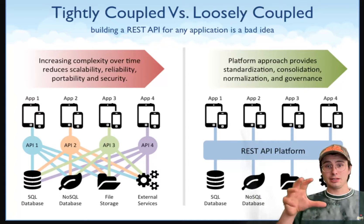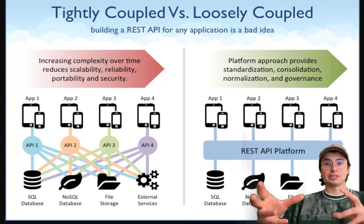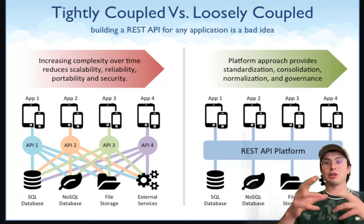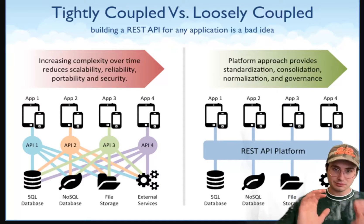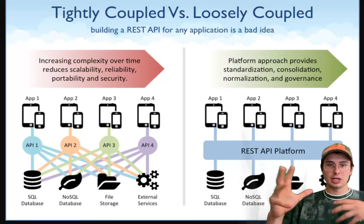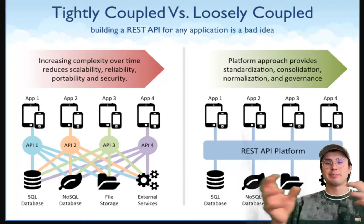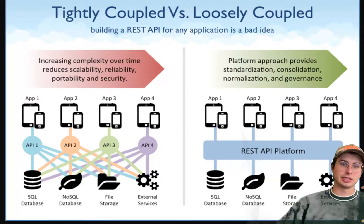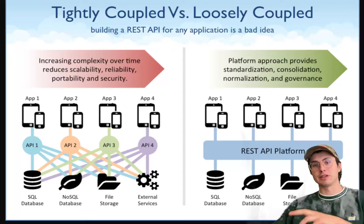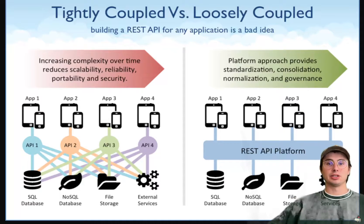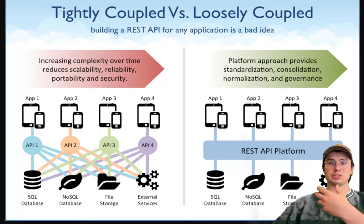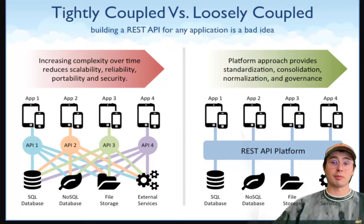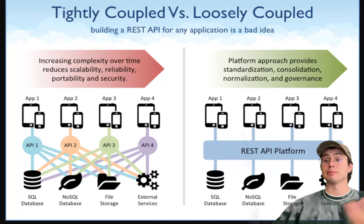Monoliths consolidate all system functionalities into a single deployment unit. While easier to develop initially, monoliths suffer from scalability and flexibility issues as systems grow. Microservices, on the other hand, break down monoliths into independently deployable modular services, where each service addresses specific business functionalities and interacts with others through APIs — promoting scalability, resiliency, and accelerated development because everyone can work on their own components independently.